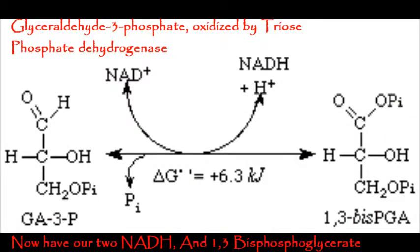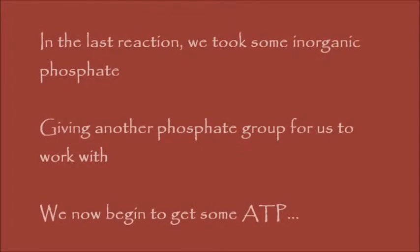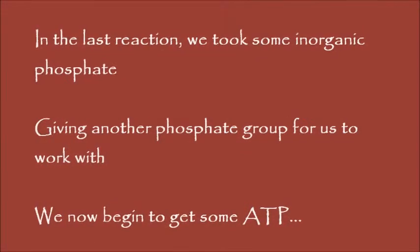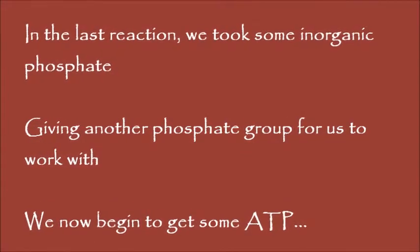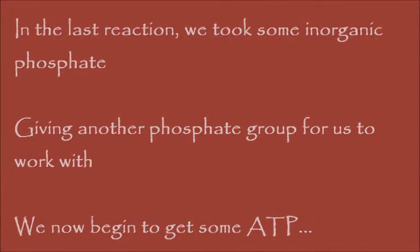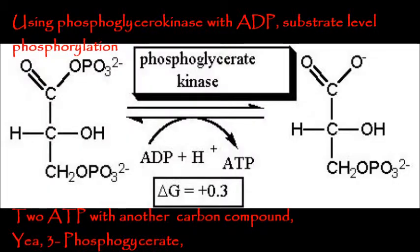Oxidation — here's glyceraldehyde-3-phosphate dehydrogenase. Now we have two NADH and 1,3-bisphosphoglycerate. In the last reaction, we take some inorganic phosphate, keeping another phosphate group for us to work with. Now we begin to get some ATP, using phosphoglycerate kinase with ADP — substrate-level phosphorylation — to ATP with another carbon compound.